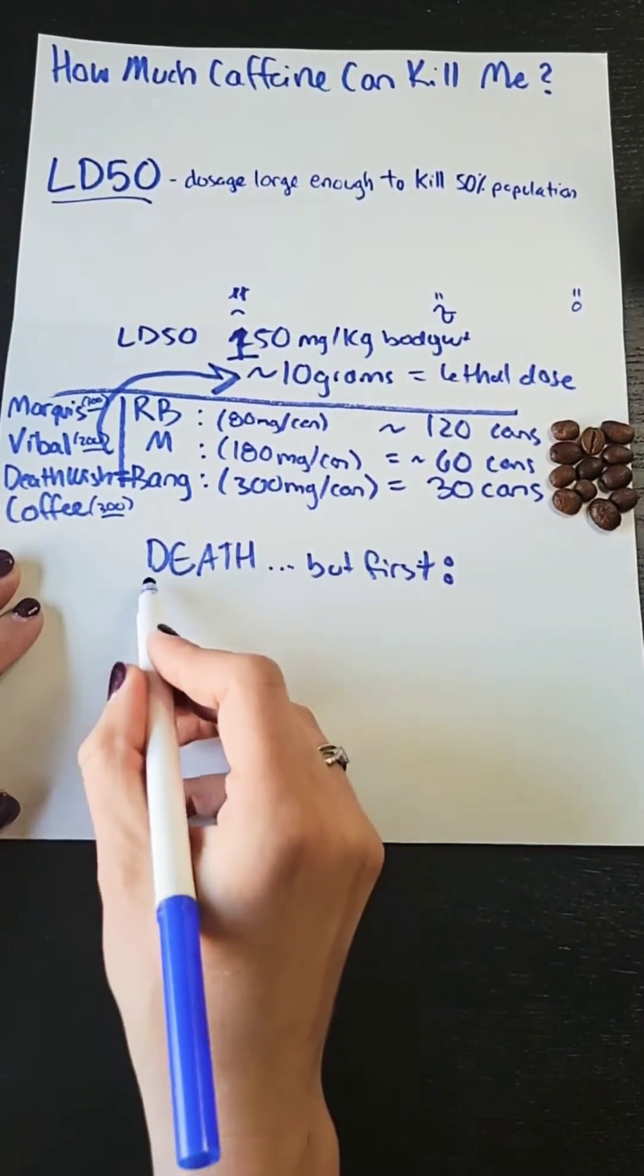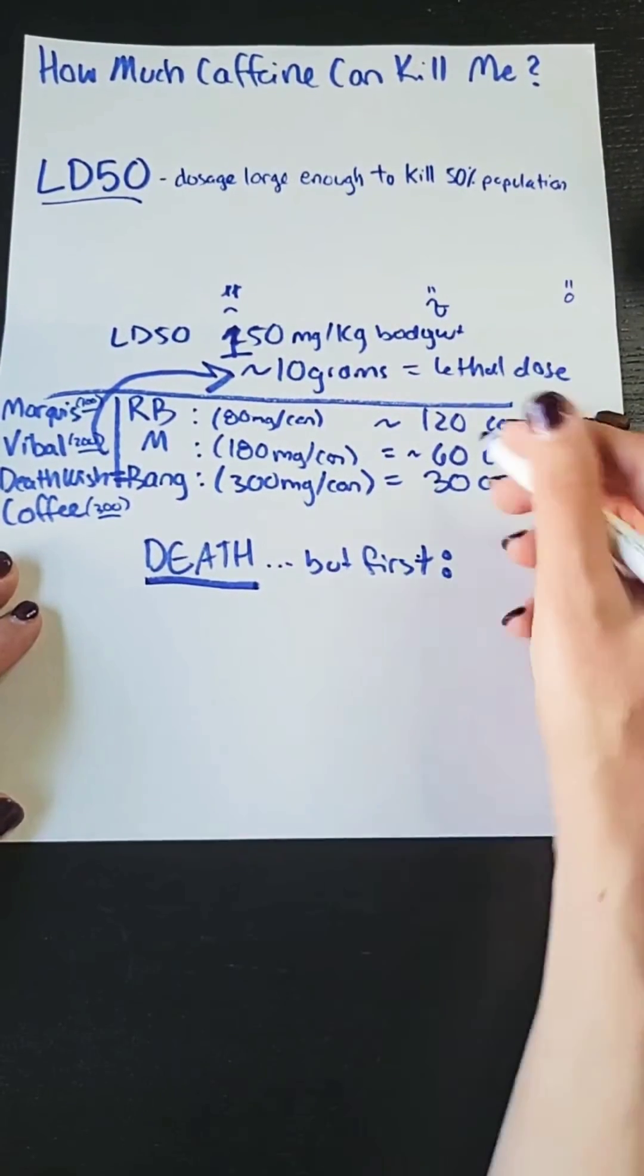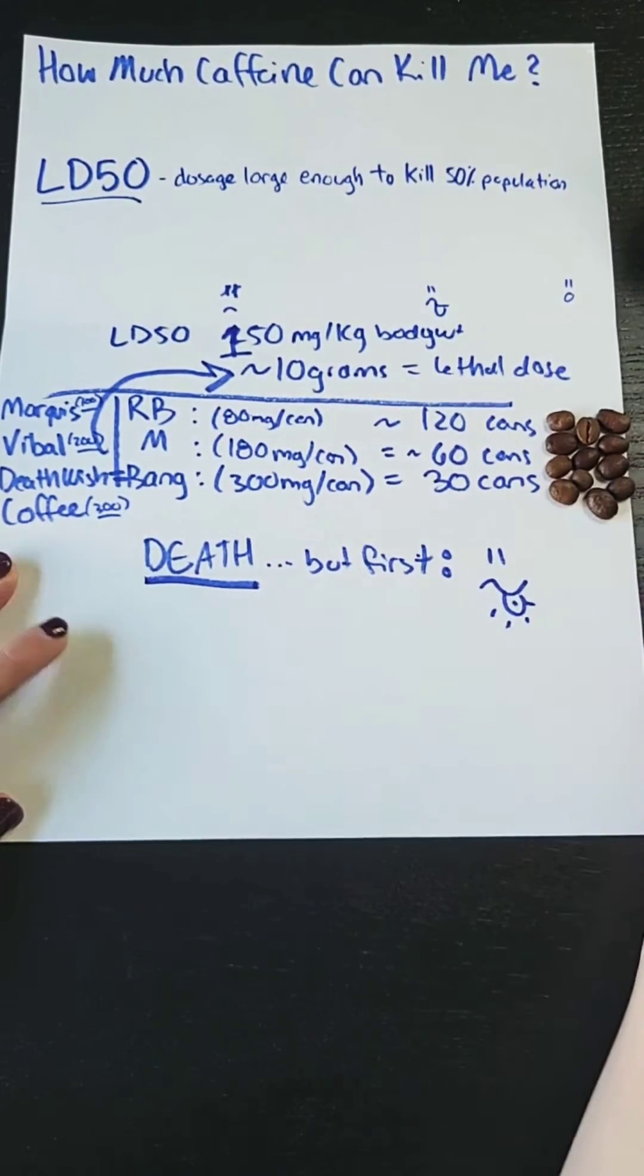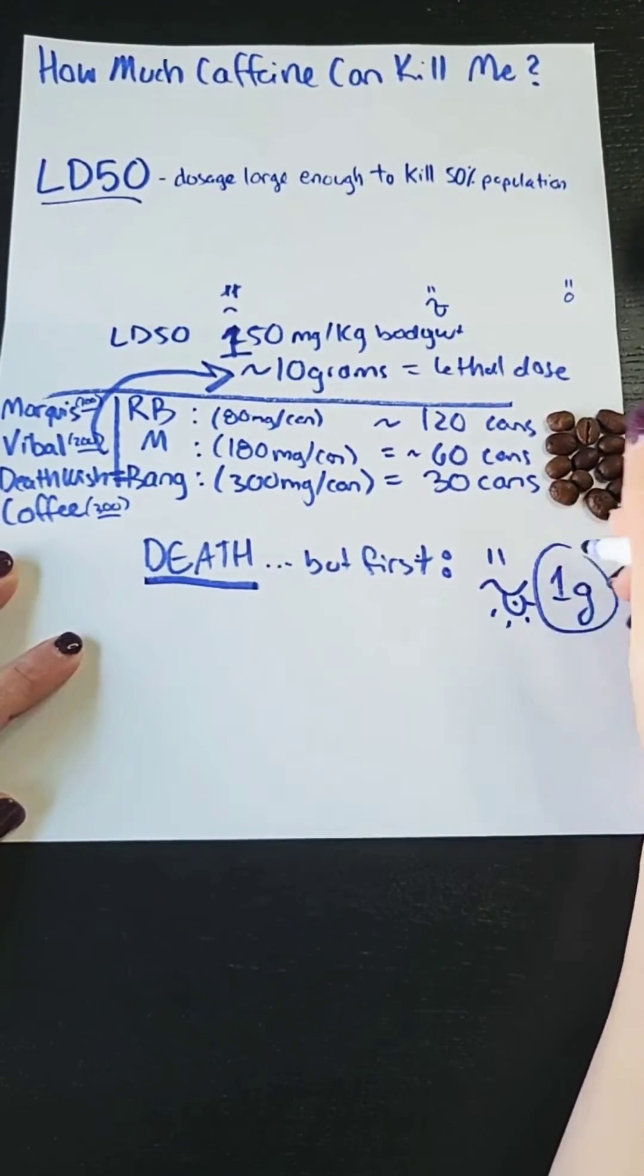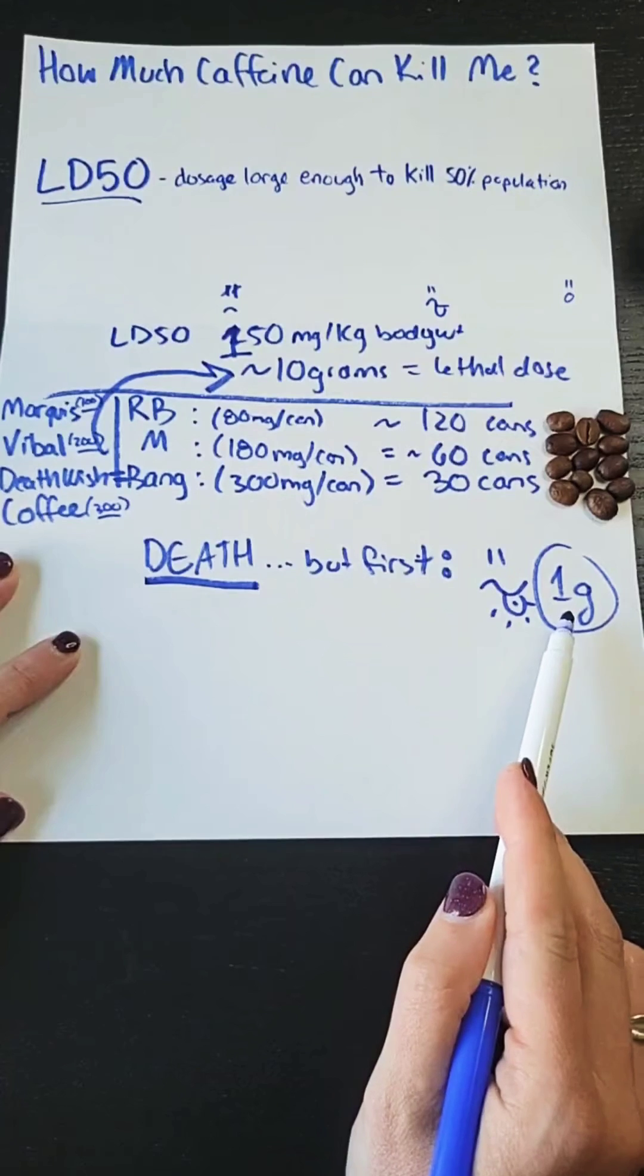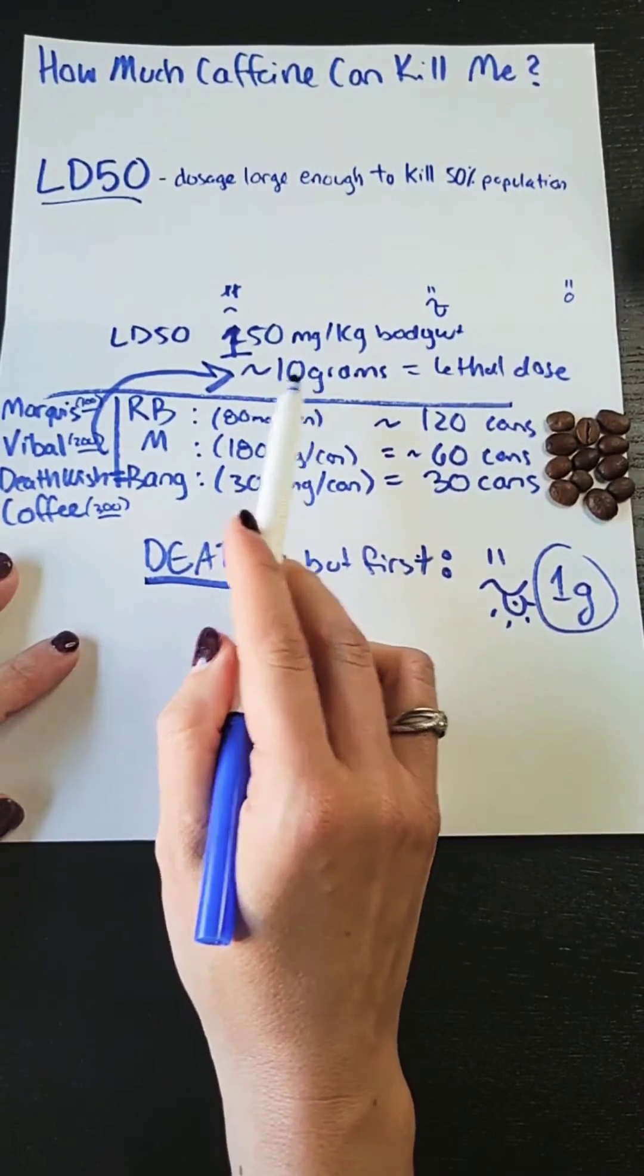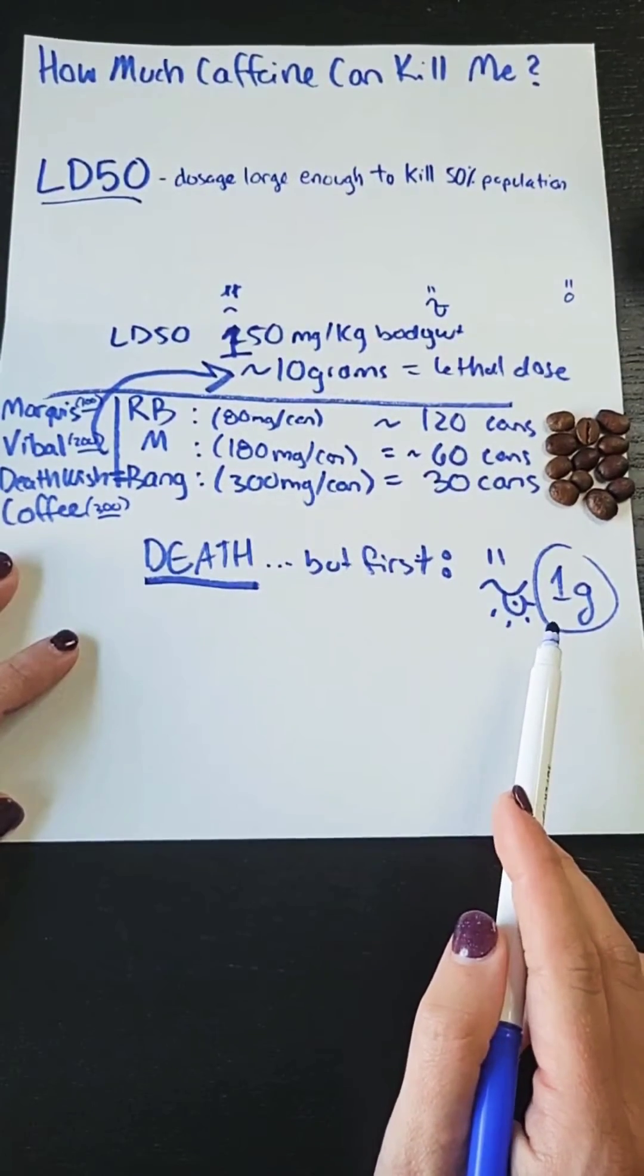So this is essentially death we're talking about, but first before you get there you're still going to feel pretty sick. Most people feel symptoms of caffeine overdose around one gram. So way before you get to this 10 gram lethal dose, you're usually feeling not too hot. It's usually a warning sign well before you get to the 10 gram mark that you're in trouble.